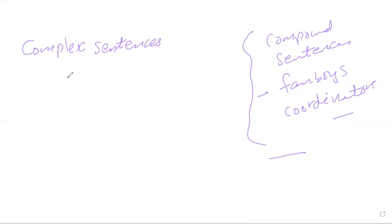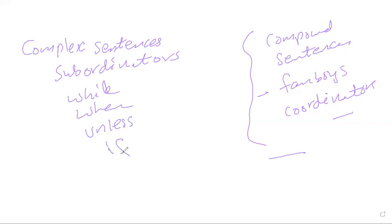to understand complex sentences you need to understand the concept of subordinators. The words like while, when, unless, if, which, because, as - they all are called subordinators. What do they do? They combine two clauses